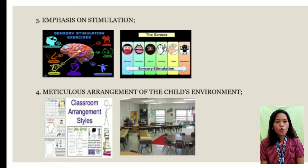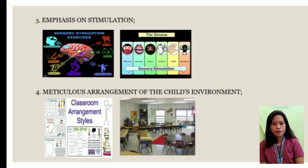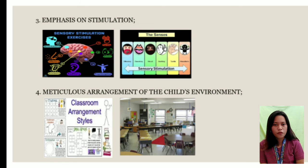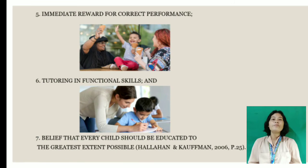Number four, meticulous arrangement of the child's environment. Meticulous arrangement of the child's environment will matter for the development or growth of the child. If you have a good classroom arrangement, it will inspire and encourage the children to easily interact with each other and develop various skills, including language and social behavior. And if you have a poor classroom arrangement, it will affect children's free movement, and it may result in problems.